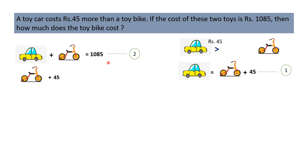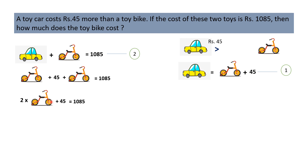Everything else remains the same. The equation has become: 2 toy bikes plus Rs.45 is equal to Rs.1085. This is an addition problem — one addend, another addend, separated by a plus sign, and this is the sum.